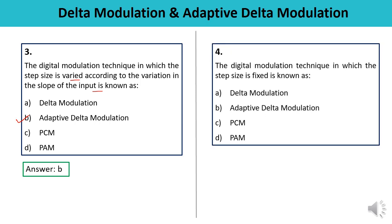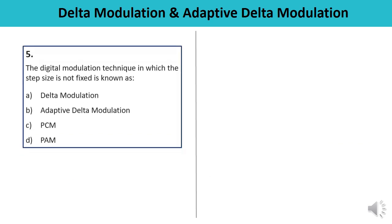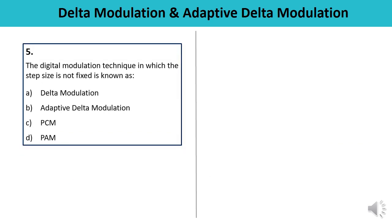Question 4: The digital modulation technique in which step size is fixed is known as? When the step size is fixed, that technique is known as Delta Modulation. So the answer is A. Question 5: The technique in which step size is not fixed is known as? As discussed in the previous question, step size is not fixed in the case of Adaptive Delta Modulation. So the answer is B.